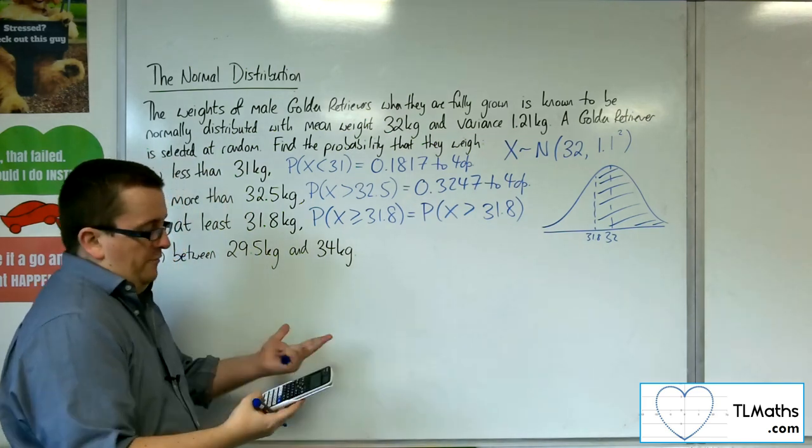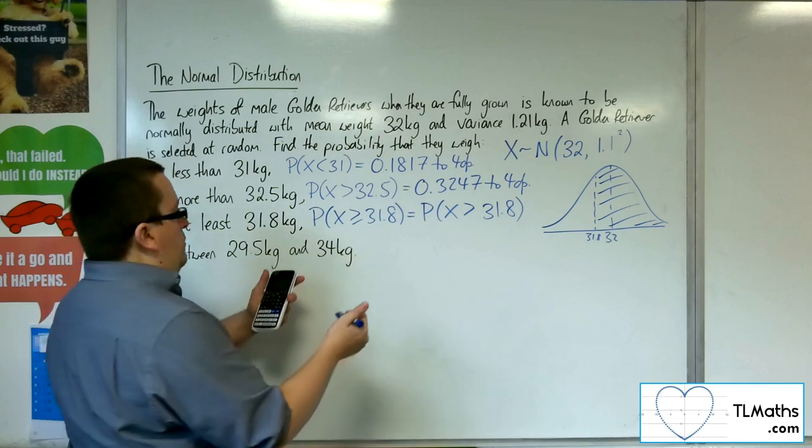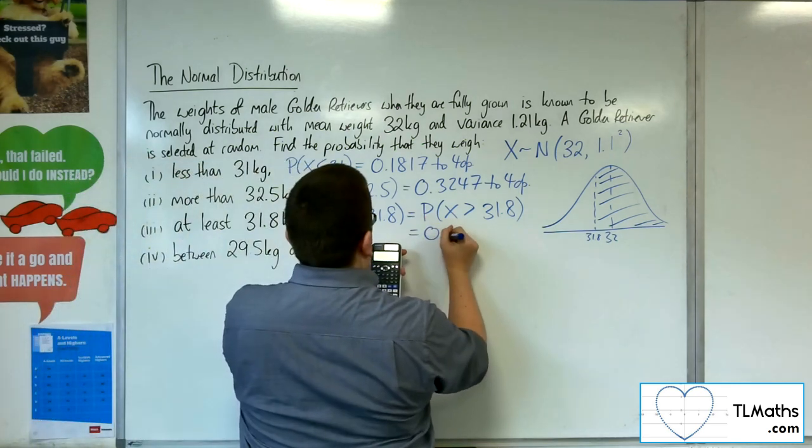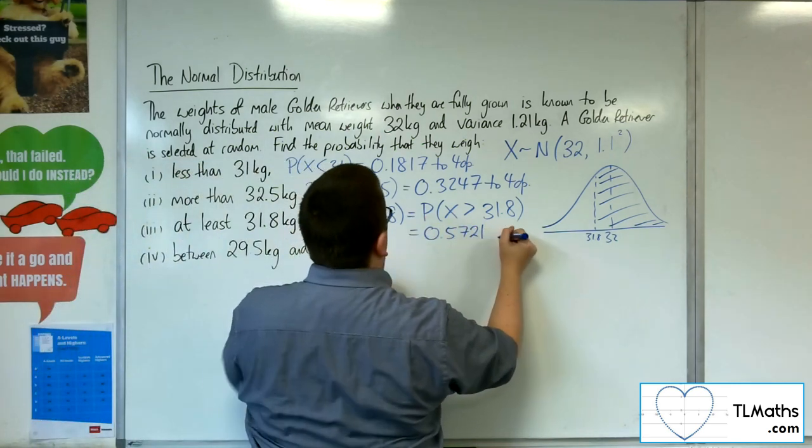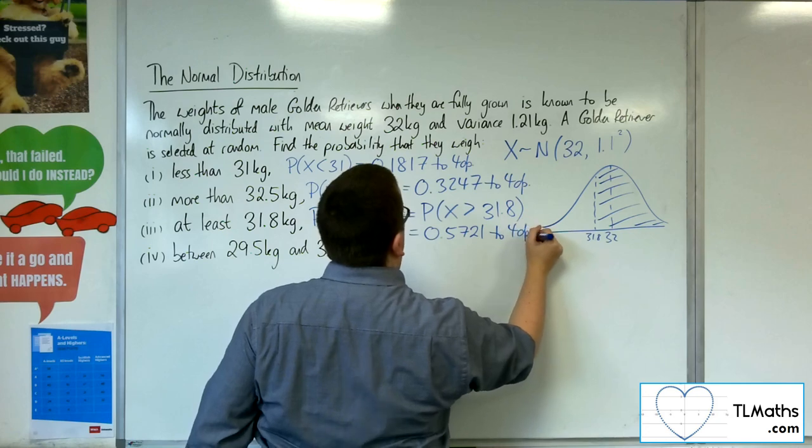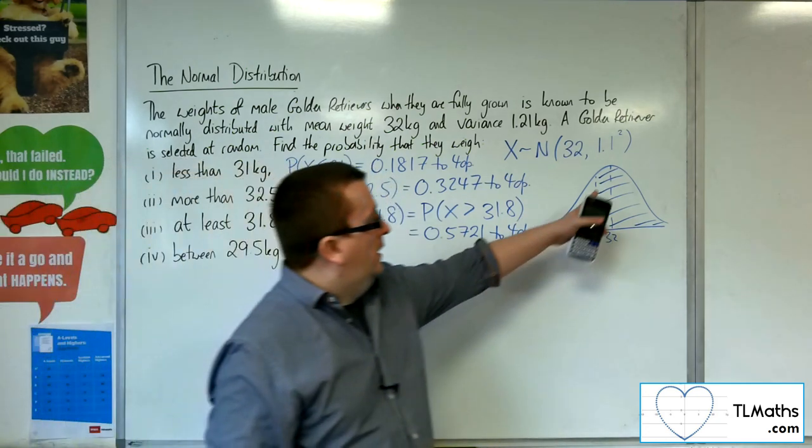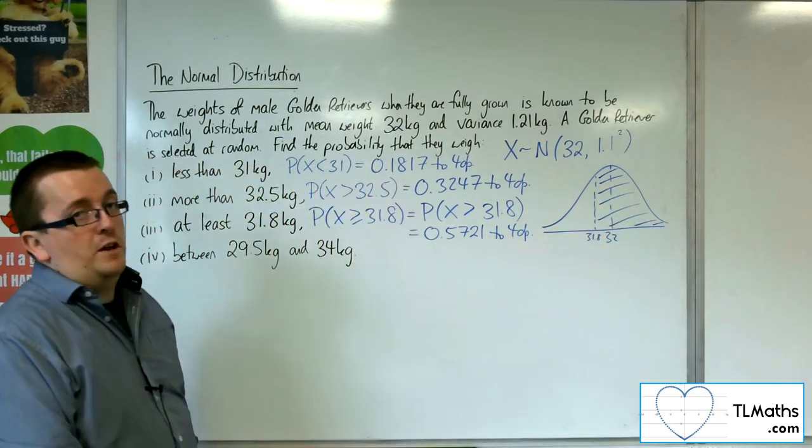So my lower value in the normal CD will be 31.8. My upper value, 50 again. So 0.5721 to four decimal places there, which makes sense because I've shaded over 50% of my diagram.